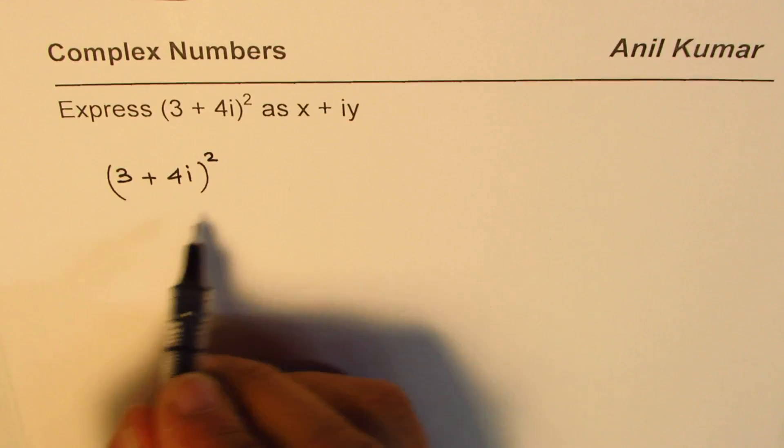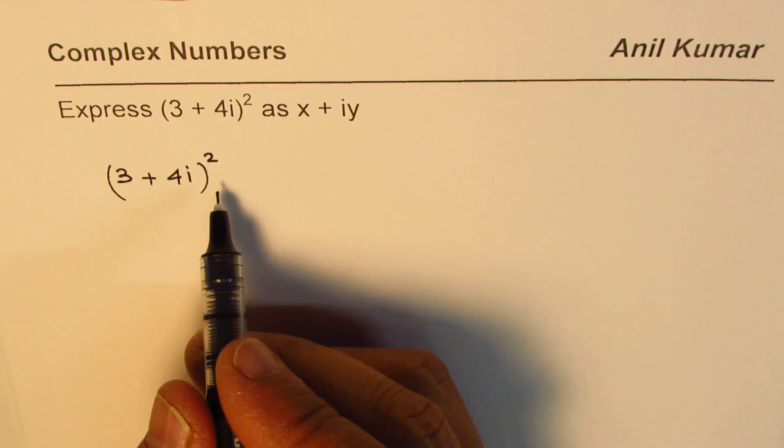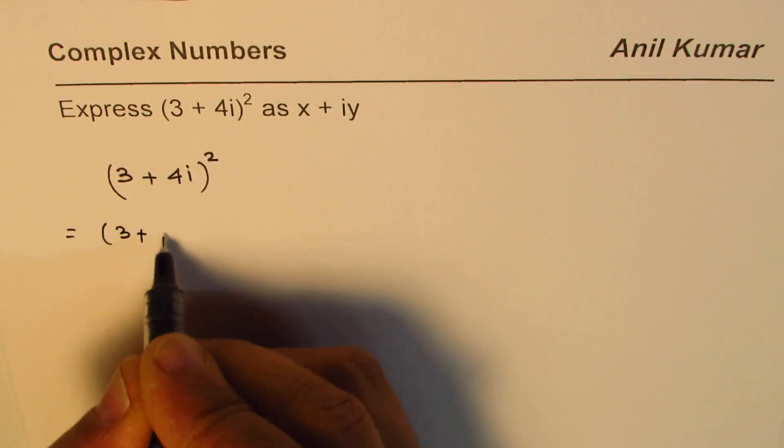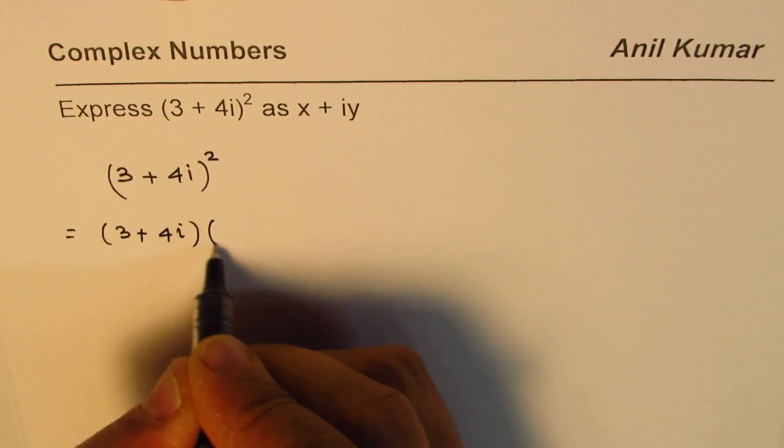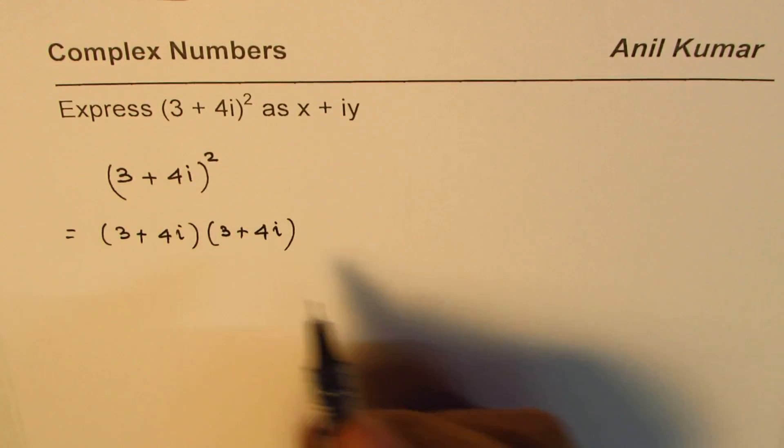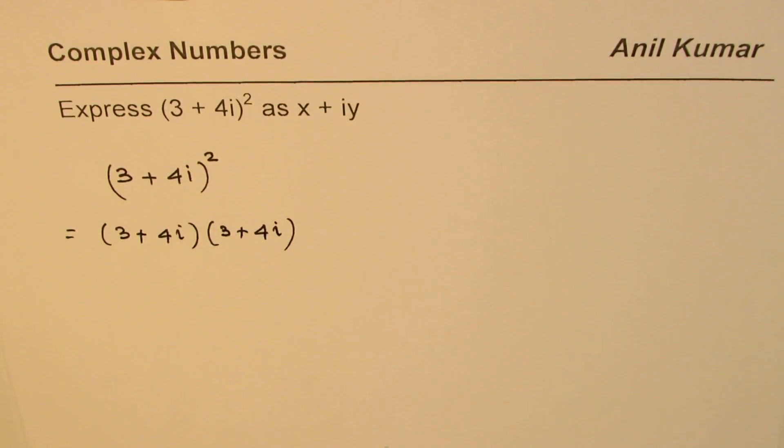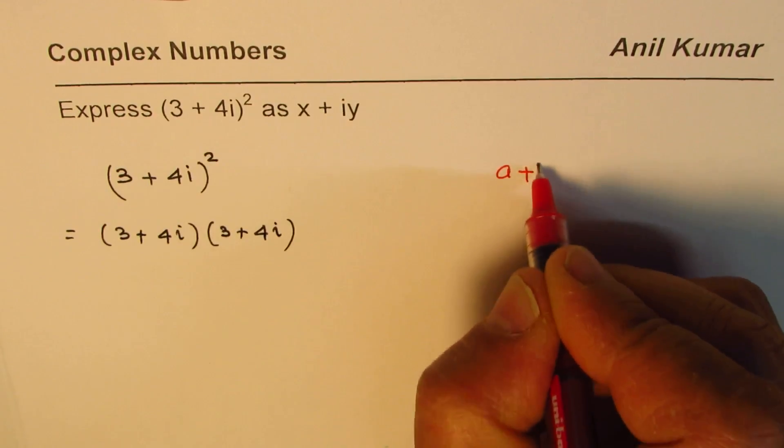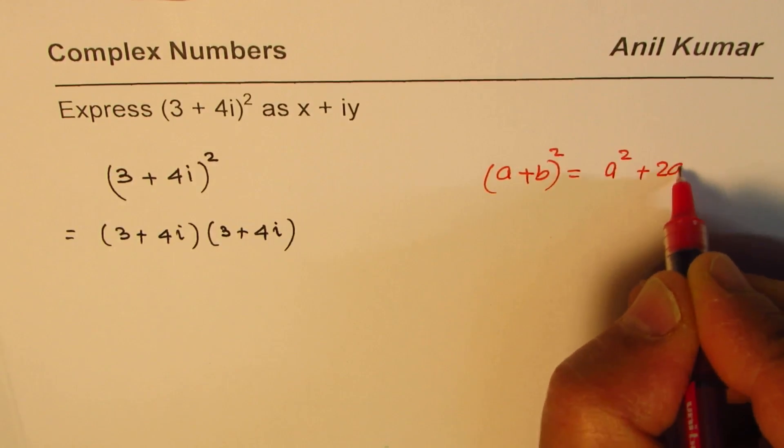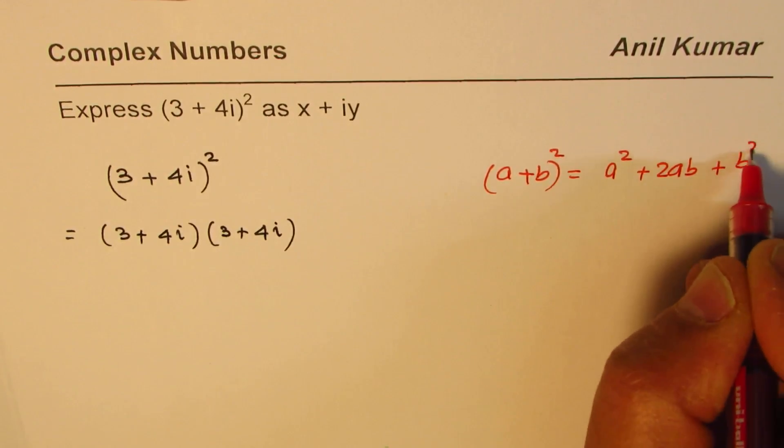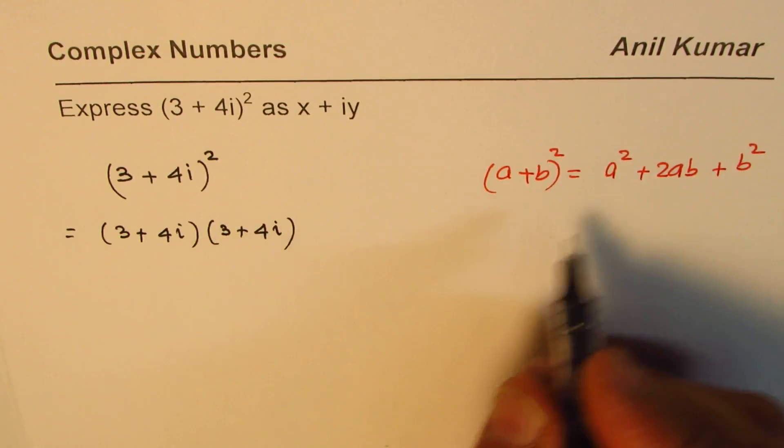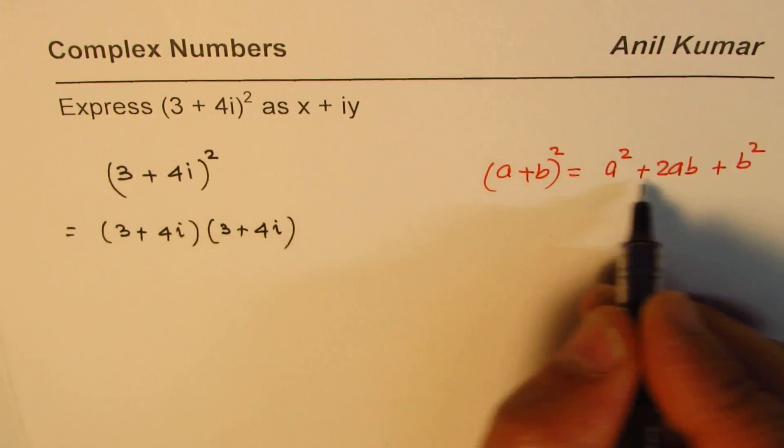Now you could actually use the formula which you remember, or you could write this as 3 plus 4i times 3 plus 4i. That is the meaning of square. Or you could use the formula a plus b whole square, which is a square plus 2ab plus b square. Either way you could solve such a question. So let us do both ways. We will use the formula first.